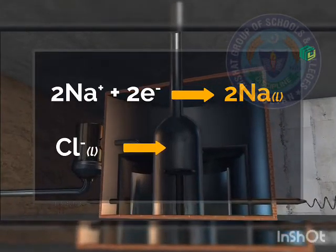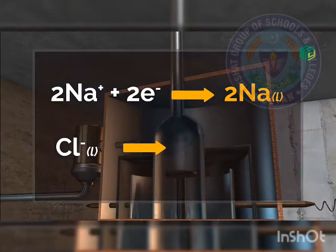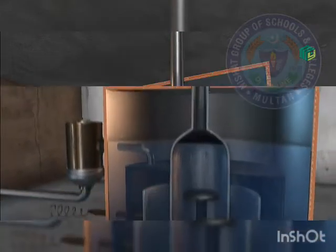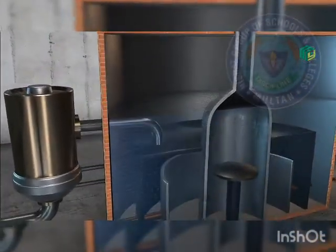Aur oxidation reaction hota hai anode par. Chloride ions electrons lose karte hain aur banate hain chlorine gas.